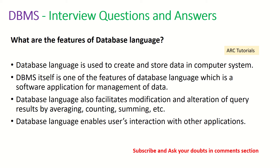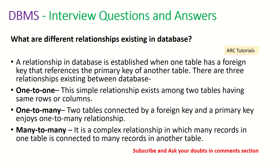What are the different relationships existing in a database? A relationship in a database is established when one table has a foreign key that references the primary key of another table. The relationship between tables is based on multiple connections: it can be one-to-one, one-to-many, or many-to-many.